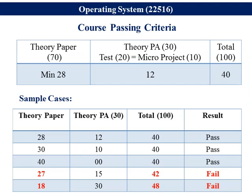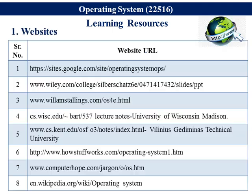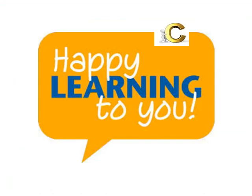For course passing criteria, you need to score a minimum of 28 marks out of 70 and 12 marks out of 30, so total 40 marks are necessary out of 100. These are the books for learning the course Operating System — you can refer to any one of them. And these are the websites from where you will get the study material for this course. And this is all about the review of the course. Happy learning to you, thank you all.